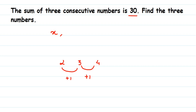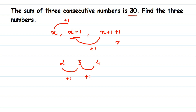If I keep adding one to the previous number, I get the next number. So the first number is x, add one to get x plus one, then add one more to get x plus two. So x, x plus one, and x plus two will be the three consecutive numbers. We've assumed them and now we'll find the value of x.